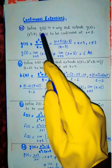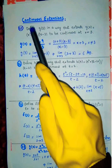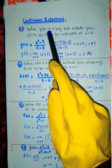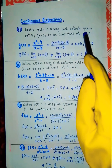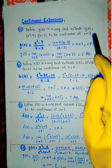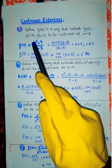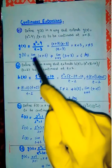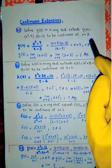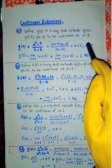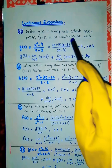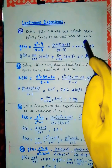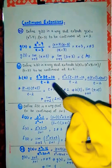Question part (a): Define g(3) in a way that extends g(x) = (x² - 9)/(x - 3) to be continuous at x = 3.